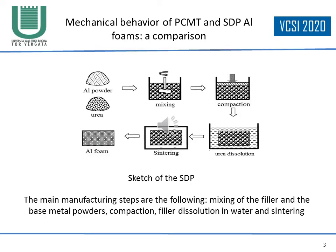In this slide, a sketch of the sintering and dissolution process is reproduced: starting from aluminum powders and urea mixing, after compaction it is possible to obtain a precursor; after urea dissolution in water and sintering, it is possible to obtain the final aluminum foam.